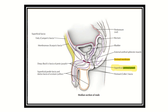The contents located superficial to the perineal membrane make up the contents of the superficial perineal pouch. By examining this photo we have to recognize all the structures located within the superficial perineal pouch.